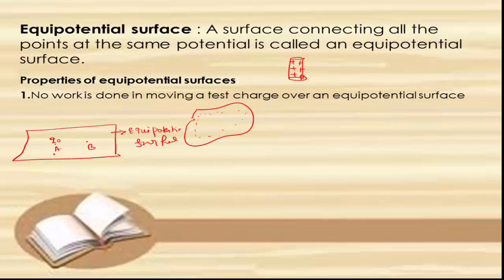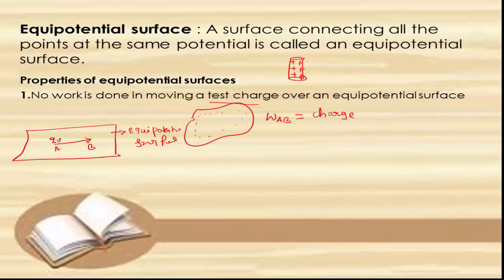Suppose a test charge q₀ is placed at point A. This test charge q₀ moves from point A to point B. The work done when the test charge moves from A to B equals charge multiplied by the potential difference — that is, the work done is the product of unit charge and potential difference.